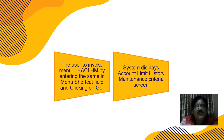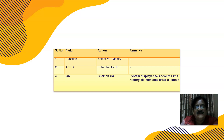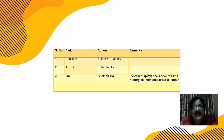To use this, invoke the menu HS CLHM by entering the same in the menu shortcut field and clicking on Go. The system displays the Account Limit History Maintenance criteria screen, which is HA CLHM. The function is Modify — enter the account ID and click on Go.